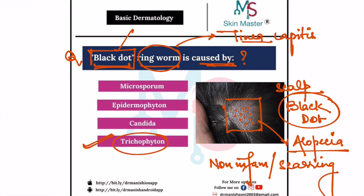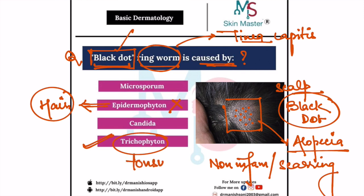Remember that this tinea capitis is commonly caused by Trichophyton tonsurans, so the answer here is Trichophyton. There is one important point to remember: Epidermophyton never involves hair, and that is why it never causes tinea capitis. The three species are Trichophyton, Microsporum, and Epidermophyton. The common one here is Trichophyton tonsurans, so this is the answer.